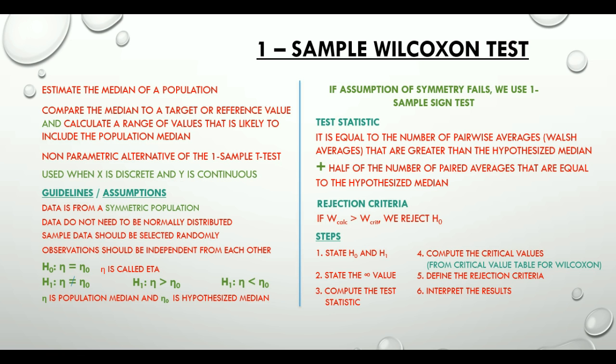Let me bring up a very common scenario from our professional lives. Say, for example, we wish to compare the overall satisfaction of customer type 1 against a specified benchmark satisfaction of 5. In such cases we can use our non-parametric, distribution-free one sample Wilcoxon test. It's amazing how statistics has an answer for virtually anything we want to test.